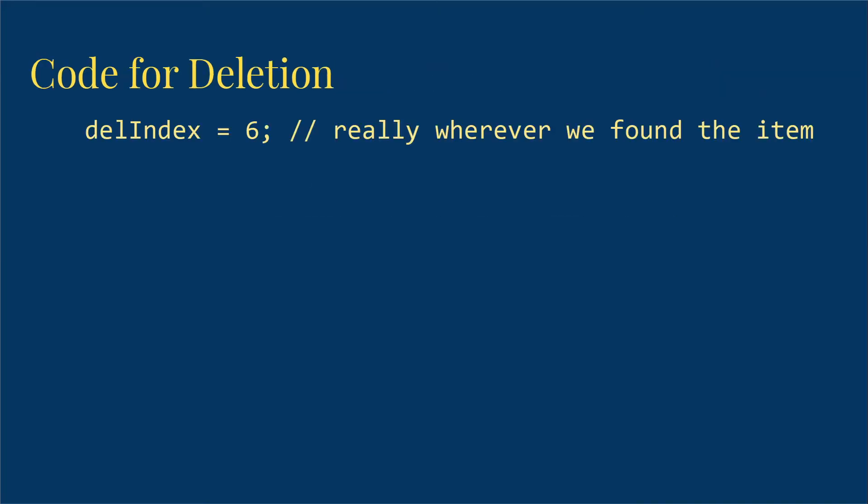We're going to assume that we have the index of the value to be deleted in a variable del index. In this case, that'll be 6.